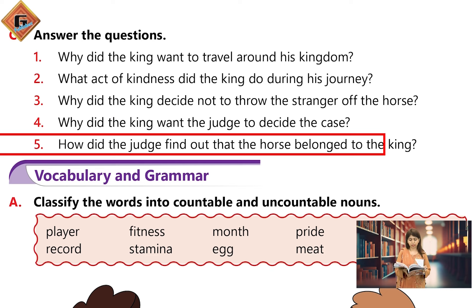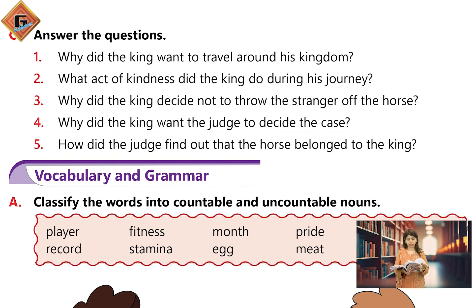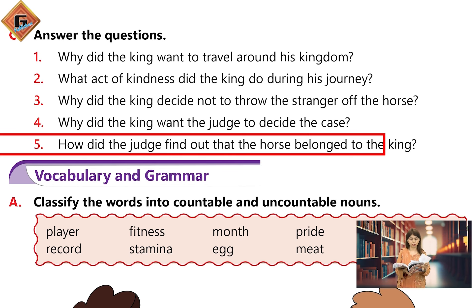Question number five: how did the judge find out that the horse belongs to the king? The judge put the horse in the stable, from where both the judge and the stranger had to pass on the way to the court. When the stranger passed, the horse did not look up. But when the king passed, the horse stretched out his head and neighed, as horses only do when their master approaches.